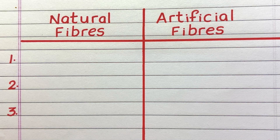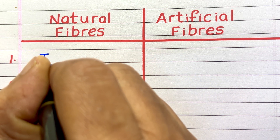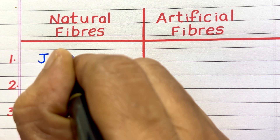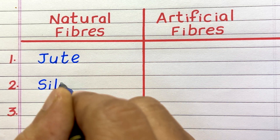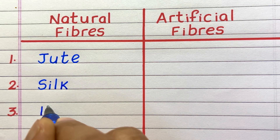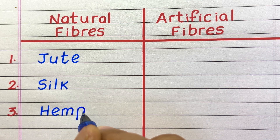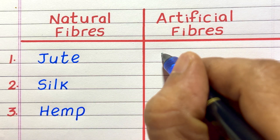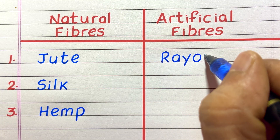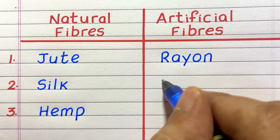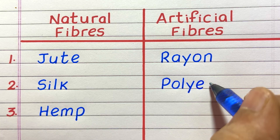Hello everyone, welcome to my channel. In this video I'll write five examples of natural fibers and artificial fibers. First example of a natural fiber is jute, second silk, third hemp. First example of an artificial fiber is rayon.